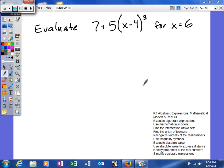All right, first thing we're going to look at is this, and it says to evaluate 7 plus 5, parentheses, x minus 4, raised to the third power for x is equal to 6.